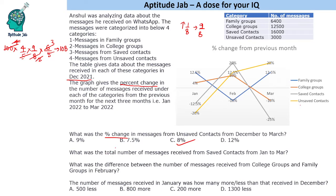The next question asks for the total number of messages received from saved contacts from January to March. Let's calculate in terms of 100 and then multiply by 16 to get the actual values, since the December value is 16,000. Saved contacts is the gray line. In January it is a 12.5% decrease, so it becomes 87.5%. In February it increases by 20%, which is six-fifths times 87.5, giving 105%.